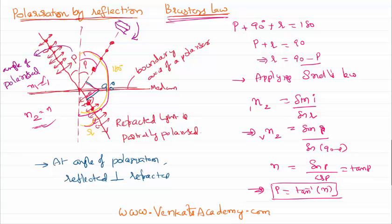To summarize: at a particular angle of incidence called the angle of polarization, the reflected light has only vertical vibrations, and the reflected and refracted light are perpendicular to each other. That's it — thank you for watching, keep coming back for more video lessons.